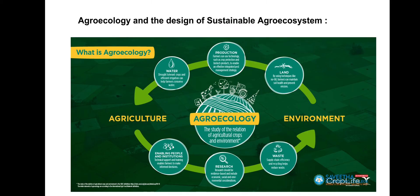Agroecology and the design of sustainable agroecosystems involves combining the different components of the farm system — plants, animals, soil, water, climate, and people — so that they balance each other and have the greatest possible synergy. It also reduces the use of off-farm, external, and non-renewable inputs, relying mainly on resources within the agroecosystem. It improves the match between cropping patterns and the productive potential and environmental constraints of climate and landscape.